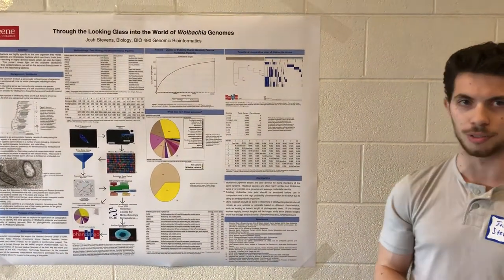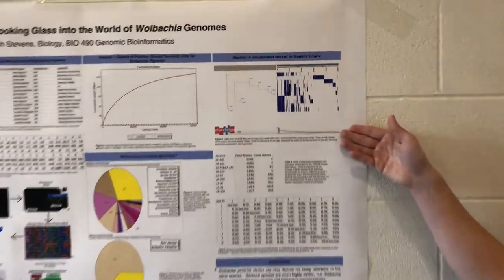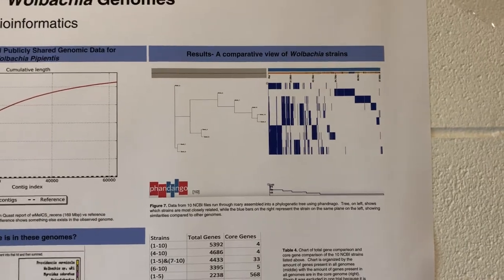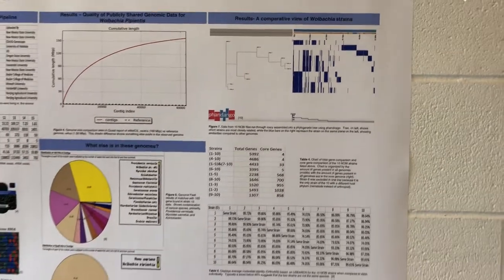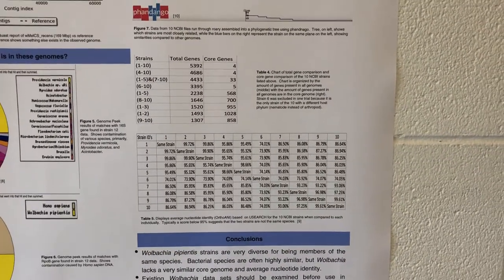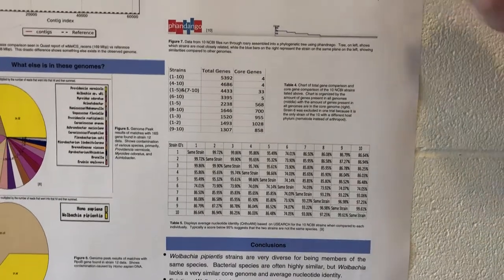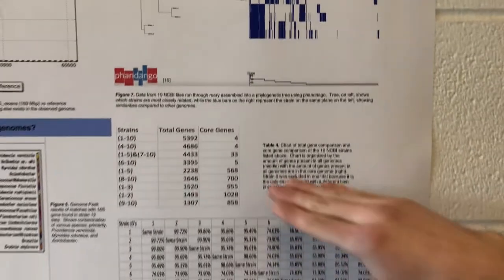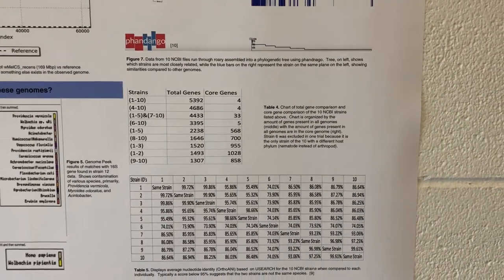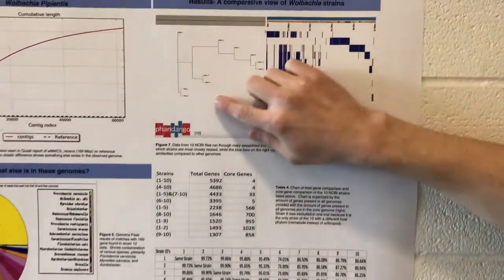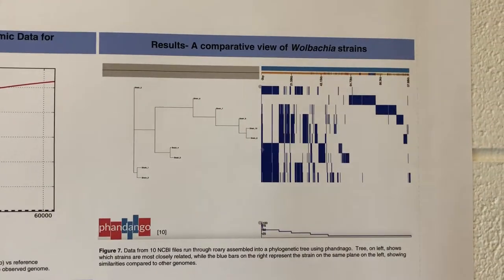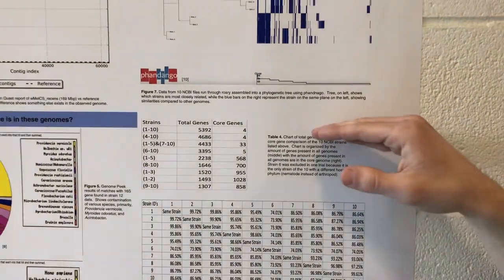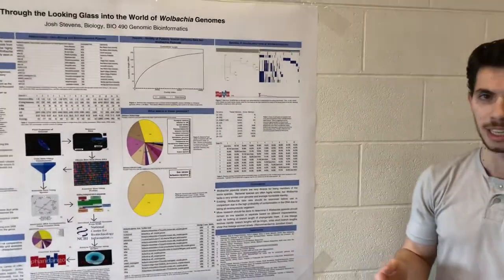Next, I did a comparison of the core genes using Roary to make a Phandango graph, which shows little similarity in the genomes themselves. Looking at total core gene sizes in different small groups of these strains: in strains 7 through 10, there were only 700 core genes out of 1,600 present. In strains 3 through 1, there were 955 core genes. When all strains were combined, there were only 4 total core genes shared, meaning there is lots of diversity in the Wolbachia pipientis species.